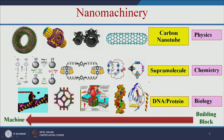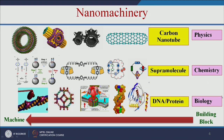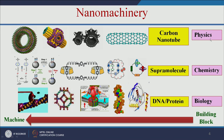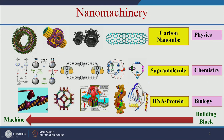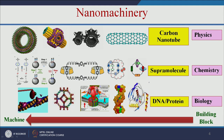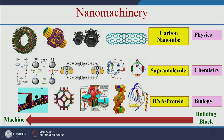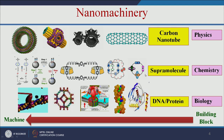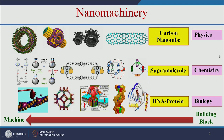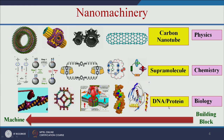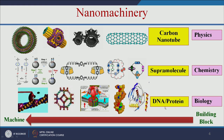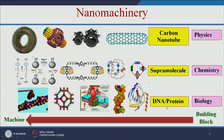There are three approaches: physics-based, chemistry-based, and biology-based. In the physics-based approach, we can use carbon nanotubes to make nanomachines or nanomotors. In the chemistry-based approach, we can use supramolecular chemistry to make small nano-size machines and nano-size switches. In the biology-based approach, we can use DNA and protein to make various nano-size machines or rotors.